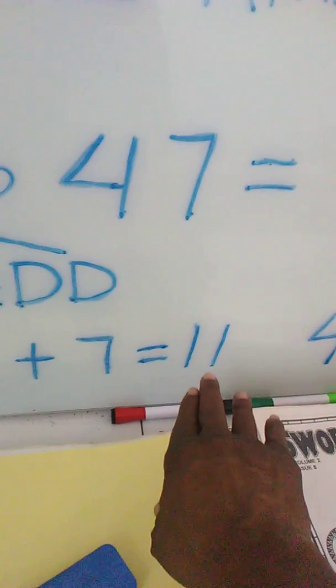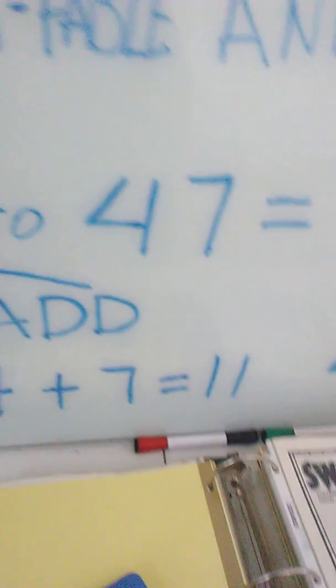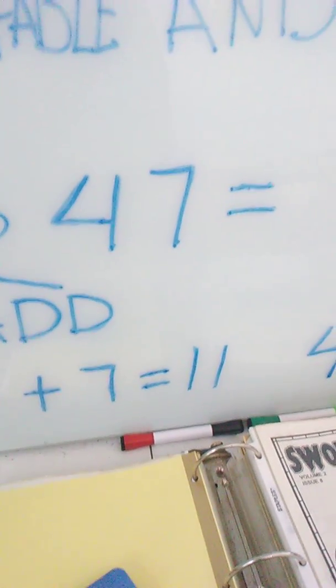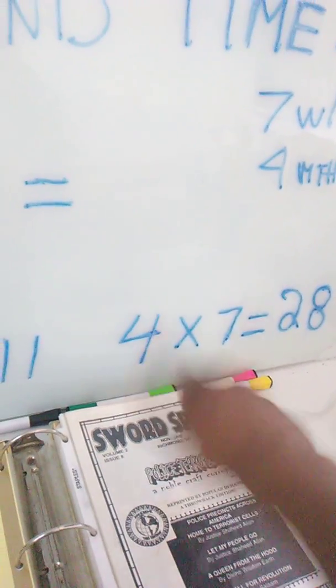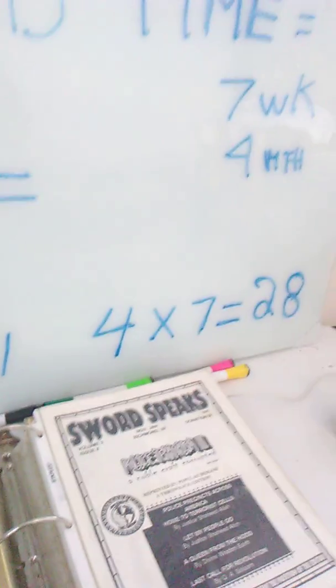Four plus seven equals 11. Four times seven equals 28. We're talking about myths, fables, and time.